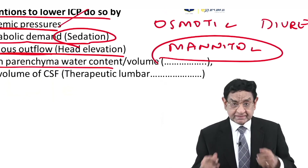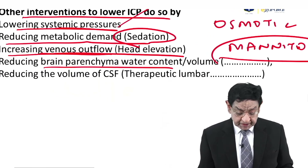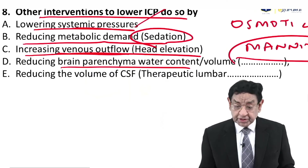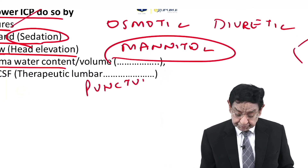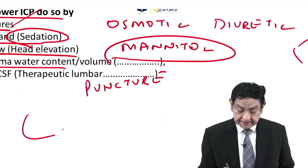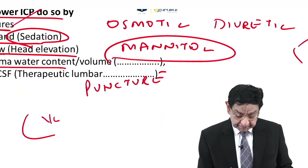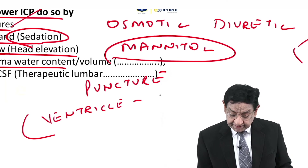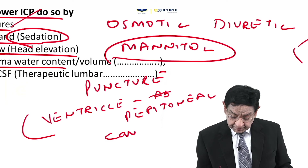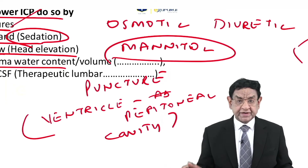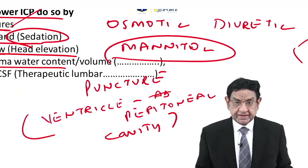One more method is to reduce CSF by repeated therapeutic lumbar puncture. Or alternatively, they can put a tube between the ventricle and the abdominal peritoneal cavity — a VP shunt — so that it will drain CSF from the ventricle into the abdomen.